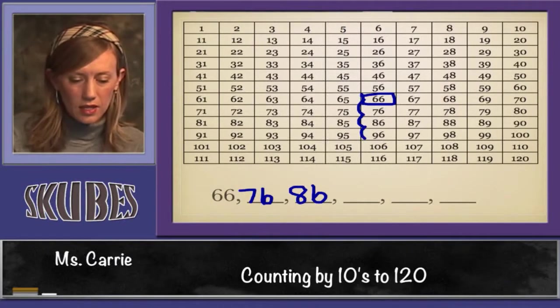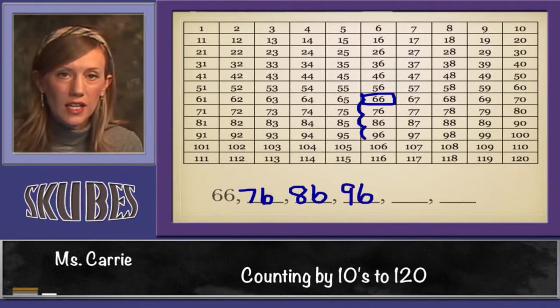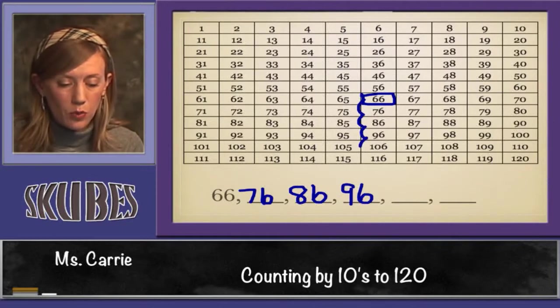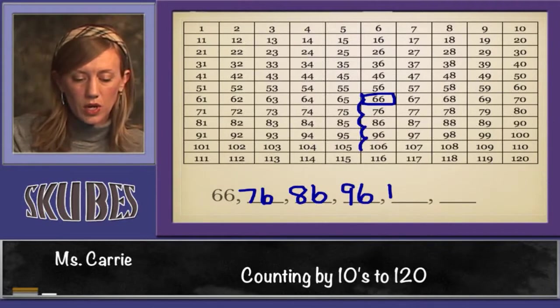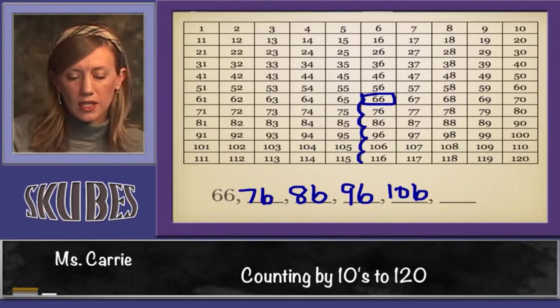Jump down again 10, we get 96. Notice they all end in 6, but the tens digit has changed up one. Then we get to 106, and finally when we add 10 more, we stop at 116.